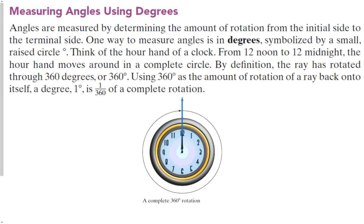I briefly talked about measuring an angle using degrees. Degree measurement is how we talk about angles and circles. When we talk about how to measure angles, we're determining the amount of rotation from the initial side to the terminal side. The degree is symbolized by a small raised circle. If you think of the hour hand of a clock — all the way around the clock from noon to midnight — the hour hand moves in a complete circle. By definition, all the way around a circle is 360 degrees.